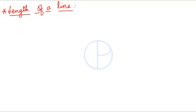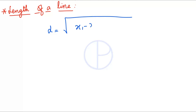Next, by using two coordinates we can find the length of a line. When two coordinate points (x1, y1) and (x2, y2) are given, the distance between them can be found using the formula: d = √( (x1 − x2)² + (y1 − y2)² ).